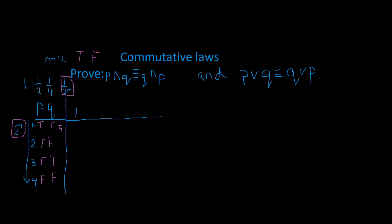So we have P and Q, and now we've got to put down our compound statements. P and Q are statement variables — these are compound statements. This is read 'P and Q.' If we remember our definition, it means that both statements have to be true in order for our compound statement to be true. So that's both true; one is true and one is false so it has to be false; one is false and one is true so it has to be false; and this is both false so it's obviously false.